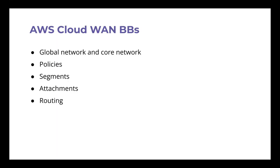So let's start with the building blocks. What do you need to build an actual Cloud WAN? You need to first understand the difference between a global network and a core network. After that, you can create your own policies that define how your core network works, then define the segments. For those segments you need attachments, and the last thing I want to talk about is routing — because that's basically the magic happening inside.